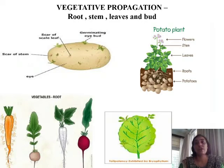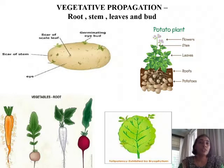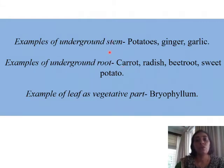Root, stem, leaves, and buds act as vegetative parts from which new plants can be formed — hence it is called vegetative propagation. In the case of sugarcane and grass, there are buds formed on the nodes and new plants develop from them. So when roots, stems, leaves, and buds are vegetative parts and new plants are formed from them, it is called vegetative propagation.